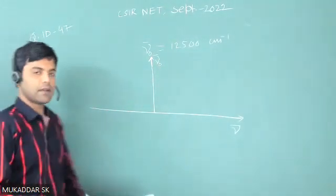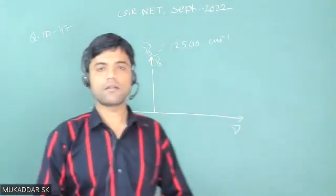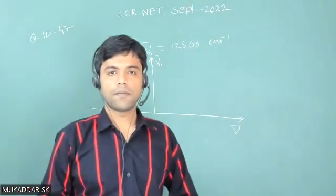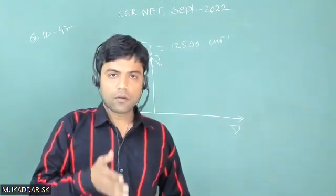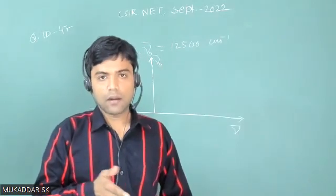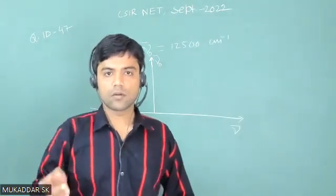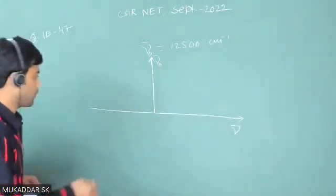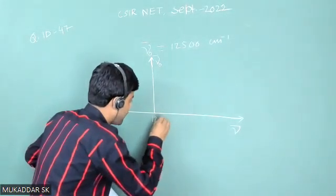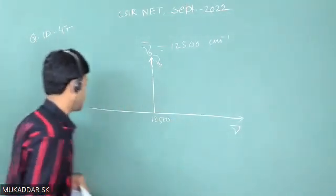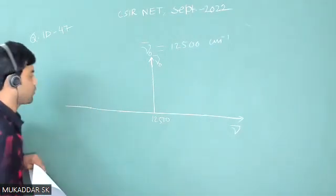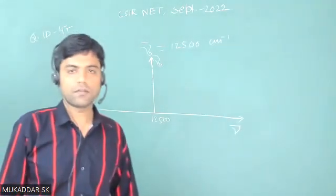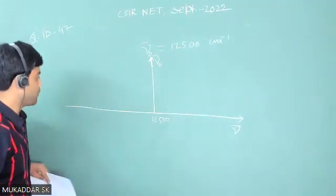In rotational-vibrational Raman spectra, you will have the vibrational spectra located at the center and around that vibrational spectra there will be many rotational lines. The first shifted band is given, and the wavenumber of the incident light is 2500 cm⁻¹. The first five Stokes bands are given.